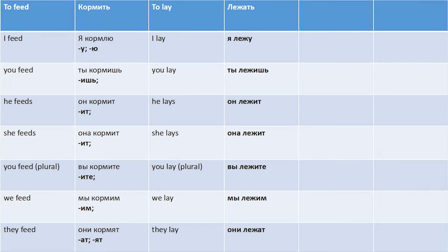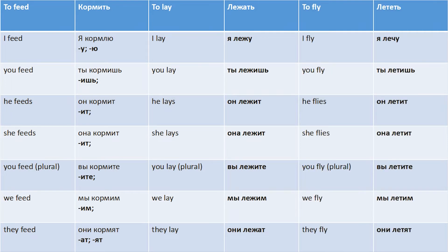And the next one is 'to lay' — лежать. So: I lay — Я лежу, with the ending -у. You lay — Ты лежишь. He lays — Он лежит. She lays — Она лежит. You lay (plural) — Вы лежите. We lay — Мы лежим. And they lay — Они лежат.